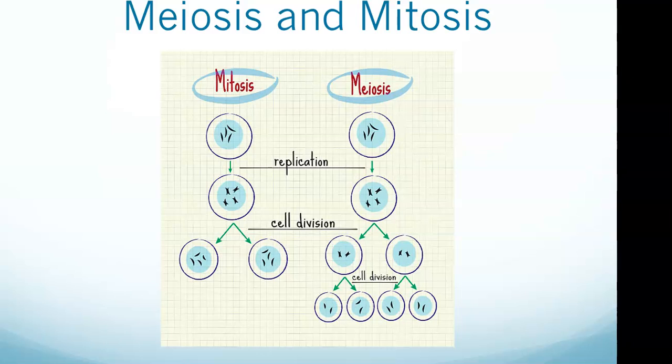Okay, meiosis and mitosis. We need to be able to recognize the difference between these two. Most of the body cells are produced through mitosis, which is a process of cell replication that results in two identical daughter cells from a single parent. The number of chromosomes remains the same as the parent, which is 46. This is a diploid cell.